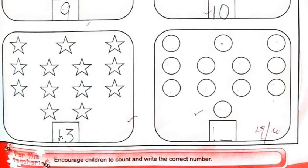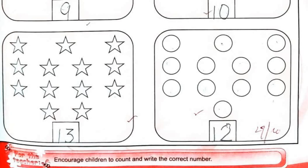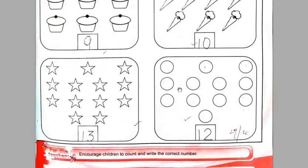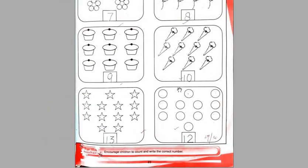Next one: circles — one, two, three, four, five, six, seven, eight, nine, ten, eleven, twelve. Twelve circles, so you have to write number twelve in the box. This is how you complete page number 22 and 23 in your math book. Thank you, students.